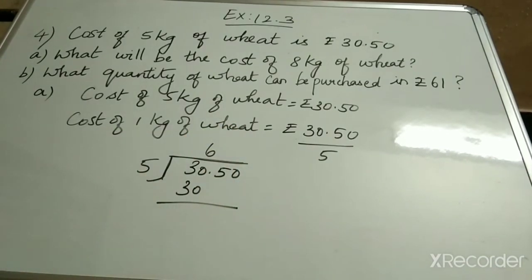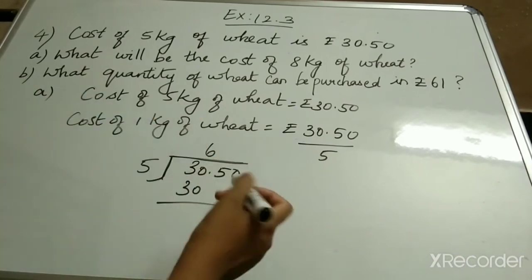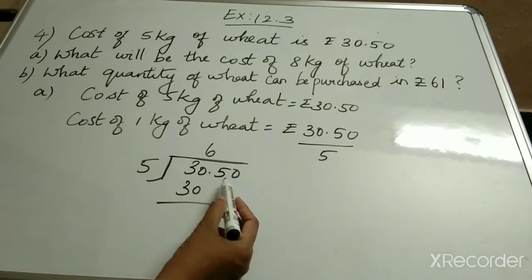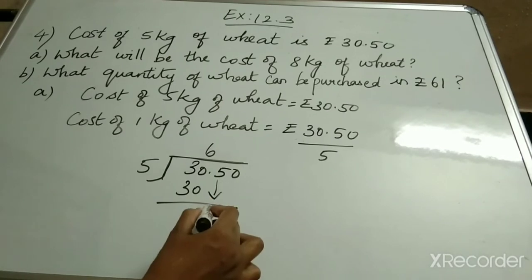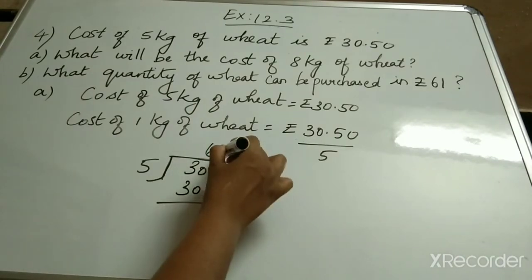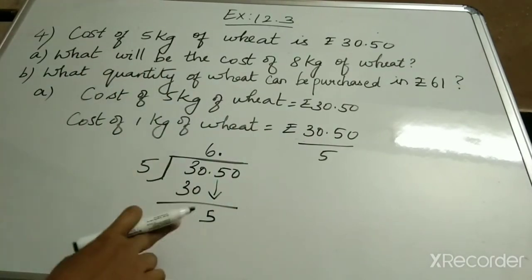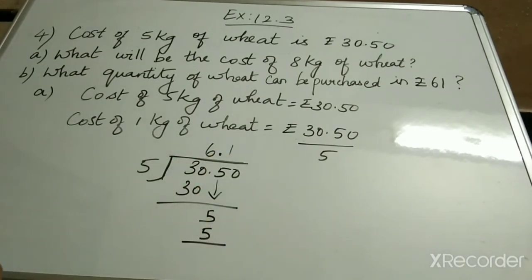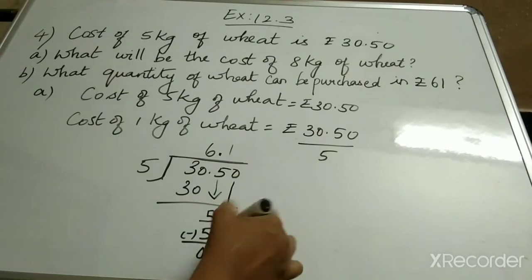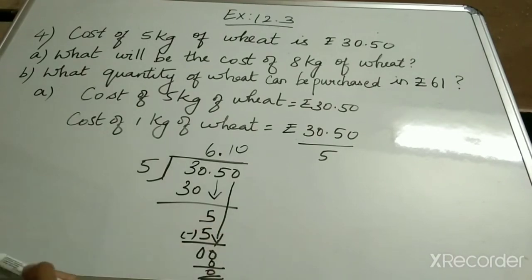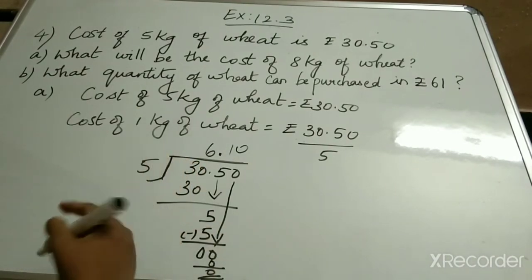When you subtract 30 from 30 you get 0. Now you have to bring down the next number, which is 0. If I want to bring down the next number, you can see a decimal point there, so I have to place a decimal point here. Now I am having 5. 5 ones are 5. When subtracting, 5 minus 5 is 0, and I have a 0 here which I bring down. 5 zeros are 0. So my answer is rupees 6.10.